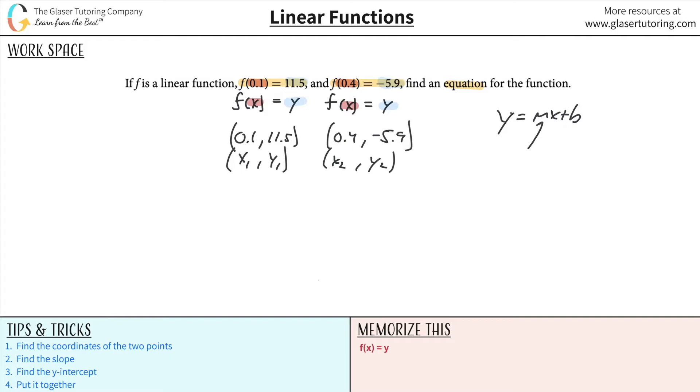So what they mean when they say find an equation for the function, they really mean find the slope of the function and the y-intercept, and then just plug it into the formula. So what we need to do is we need to find the slope and the y-intercept. And I'm going to highlight them in this equation, m and b.